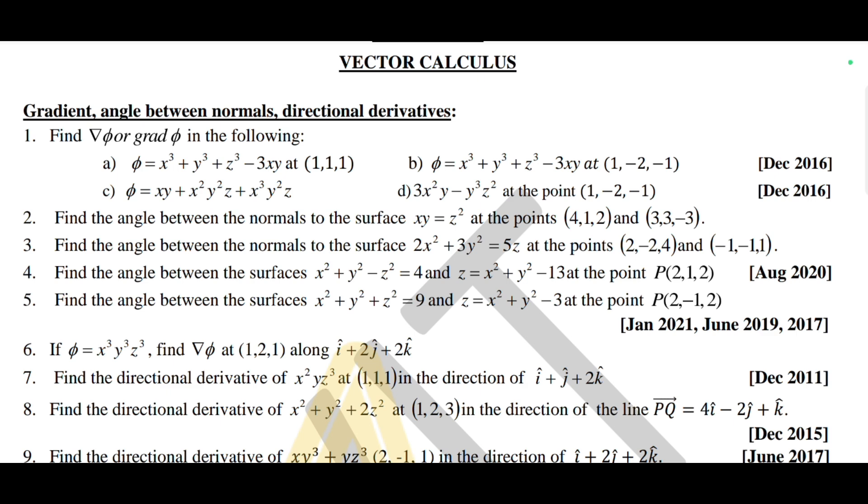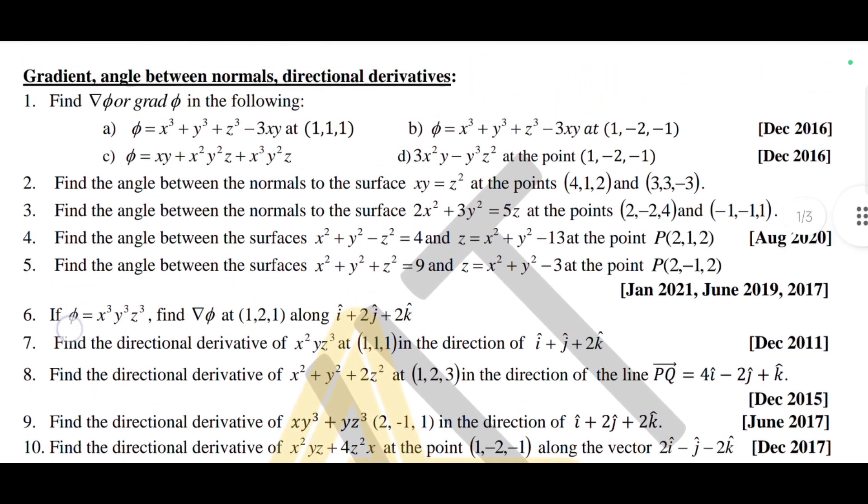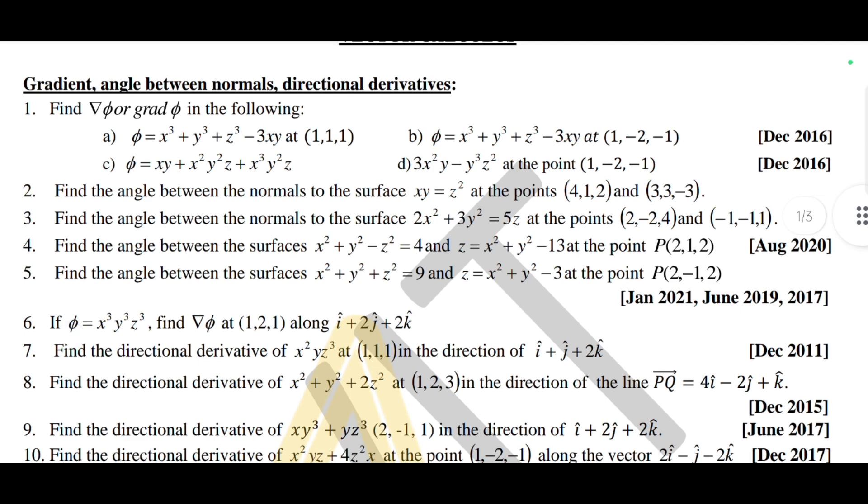This is the first module, that is vector calculus. Here are a lot of questions. I think in the first variety there are 12 questions. You don't have to go for all 12 questions. This is gradient, angle between normals, and directional derivatives. These all questions are written over here and it is mentioned how many times it has been repeated in the examination.